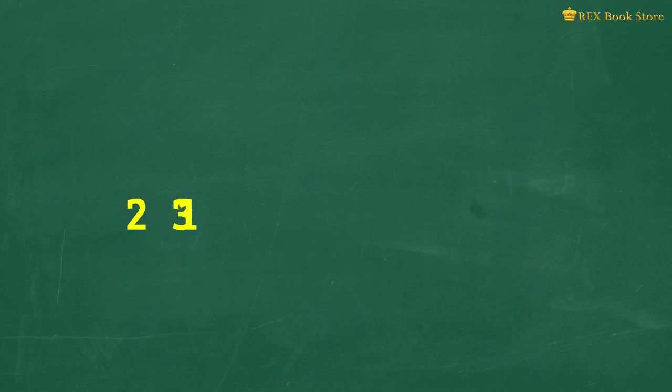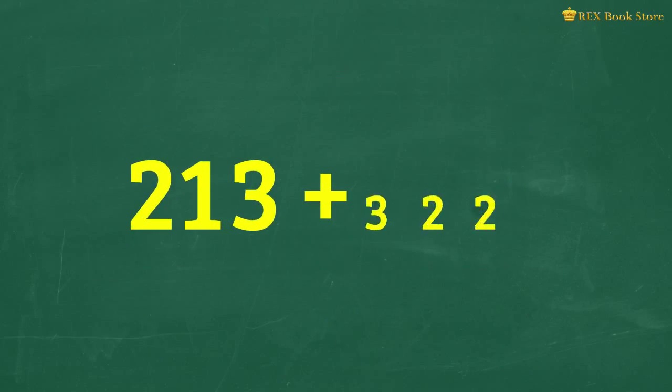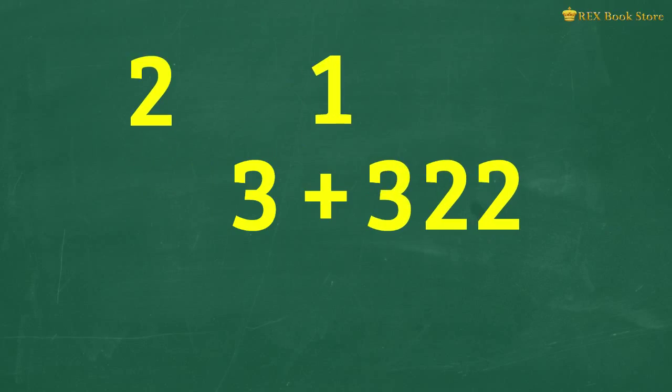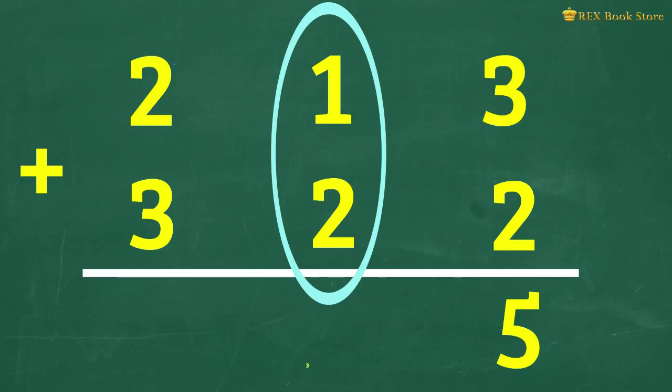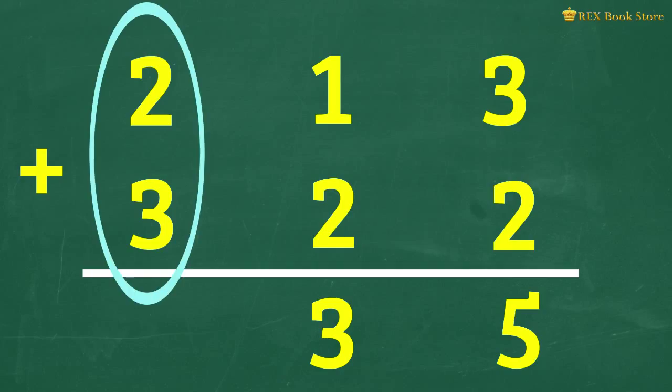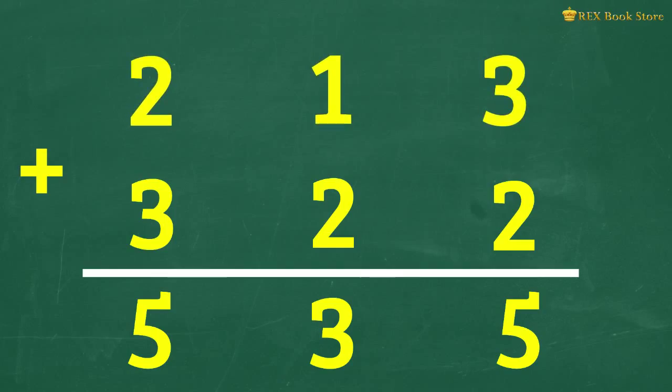Let's solve another one. What is 213 plus 322? Add the ones. 3 plus 2 is equal to 5. Then the tens. 1 plus 2 is equal to 3. And lastly, the hundreds. 2 plus 3 is equal to 5. 213 plus 322 equals 535.